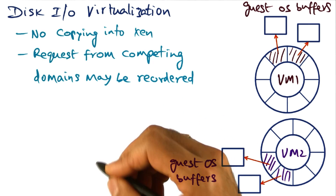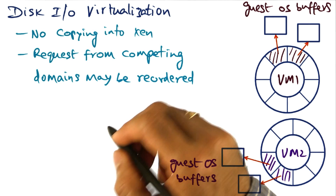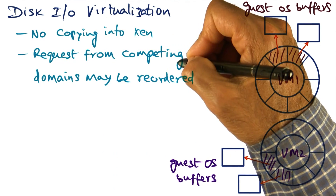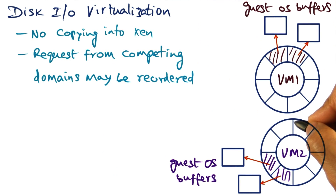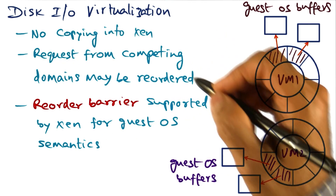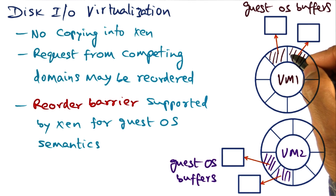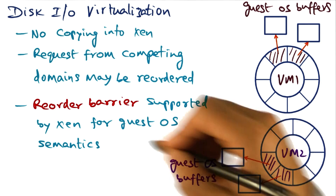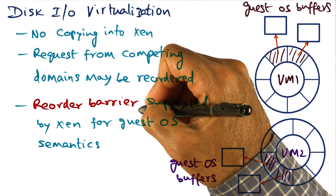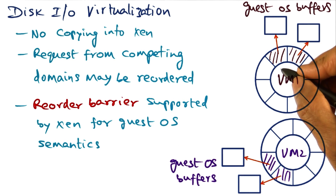Since Xen is in charge of the actual devices — in particular, in this case, the disk subsystem — it may reorder requests from competing domains in order to make IO throughput efficient. But there may be situations where such request reordering is inappropriate from the semantics of the IO operation. Therefore, Xen also provides a reorder barrier for guest operating systems to enforce that operations are done in exactly the order in which they were given.